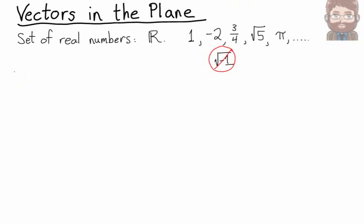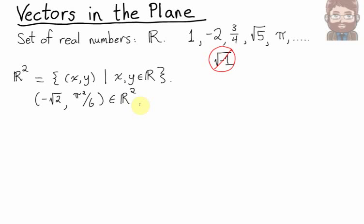All our vectors are constructed using real numbers. Now R² is how we'll denote a set of pairs of real numbers. This notation means R² is a set of x, y such that, the bar means such that, x and y are in the set of real numbers. So for instance, something like negative radical 2, pi squared over 6, that is in the set R².